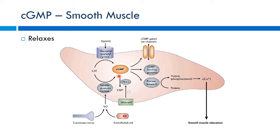Sildenafil can also be used in the lungs for pulmonary hypertension — phosphodiesterase is also important there, and inhibiting it can relax smooth muscle, allow better blood flow through the lungs, better oxygenation, and better outcomes. This is done frequently for cardiac kids. So if you see a child on Viagra or Cialis, it's usually for pulmonary hypertension, not what you might originally expect.